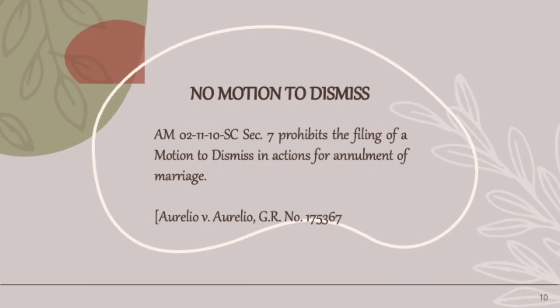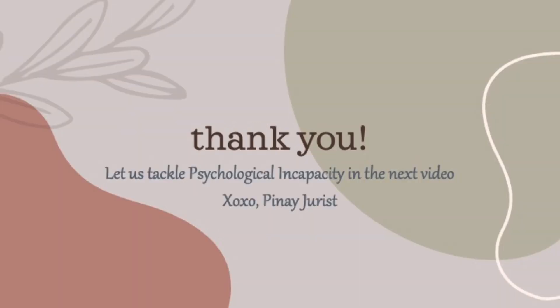Section 7 of Administrative Matter 02-11-10-SC prohibits the filing of a motion to dismiss in actions for annulment of marriage. All the best, future lawyers. Thank you and see you in the next video.